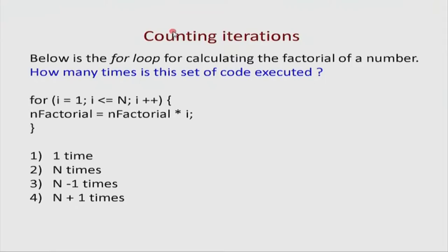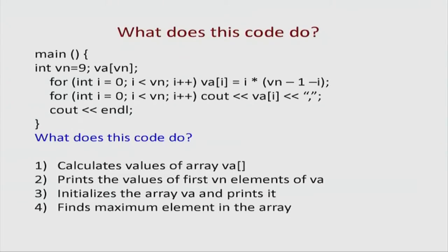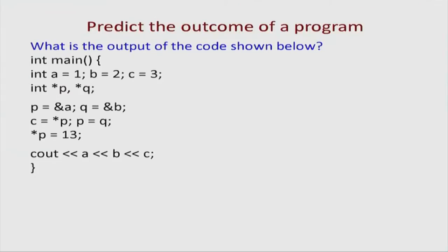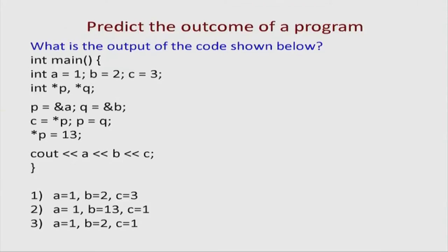In another type of peer instruction question you ask students to predict the output of a program. You give a few lines of code and ask them what the computer will output at the end, with multiple choice answers. We will let you take a look at the slide first, choose your answer, and then launch the poll so you don't need to look at the clicker for the question itself.